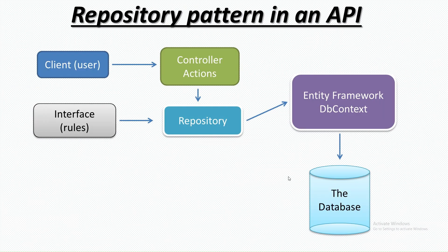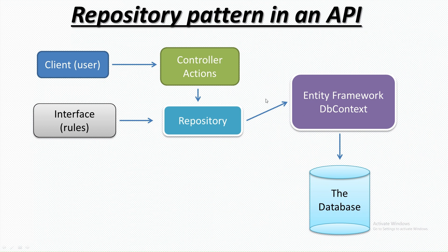Here we have a client which interacts with the controller action, and that interacts with the repository. The repository inherits from the interface — it follows the rules — and then it connects with Entity Framework or the DbContext, which is the connection string. After connecting, the Entity Framework reaches the database. So the controller has no direct relation with the database; the repository creates another layer between the controller and the database.